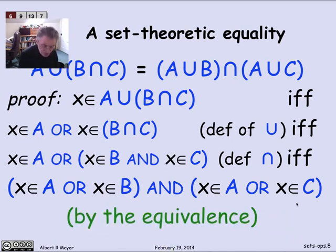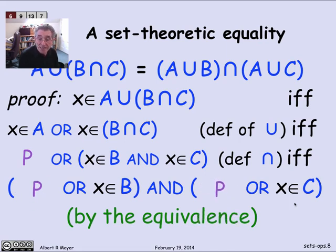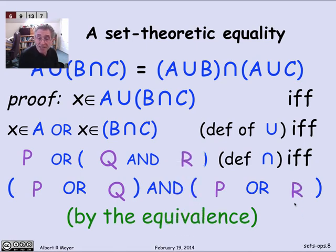If I think of the x is in A as proposition P, and let's replace all the x in A's by P, and I think of x is in B as a Q and x is in C as an R, then I can see that the first set theoretic assertion has the form of P or Q and R. And I can transform it by the propositional equivalence into P or Q and P or R.